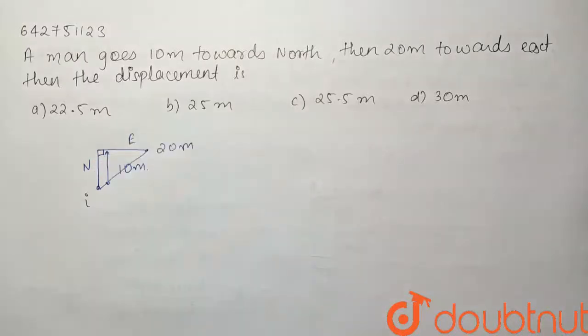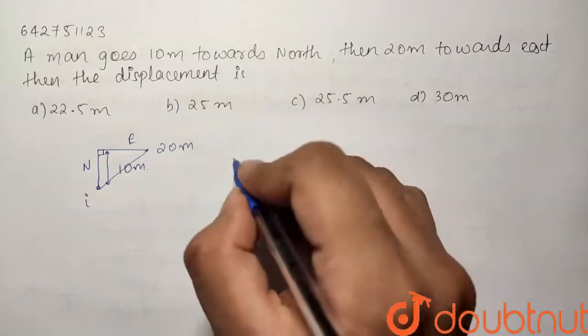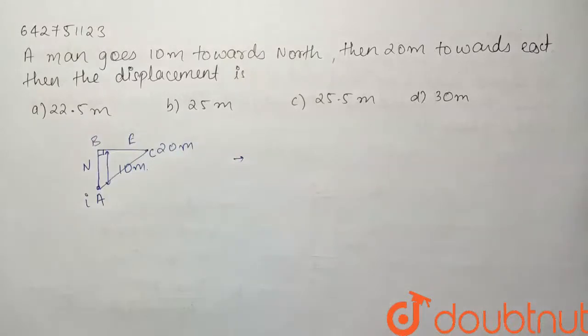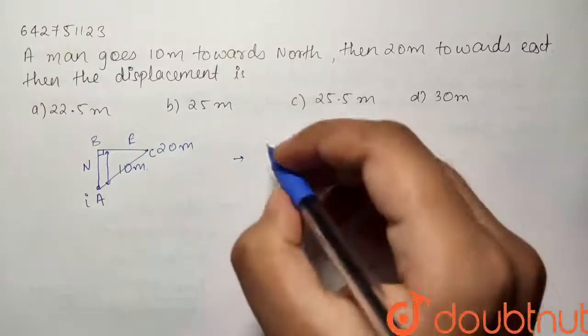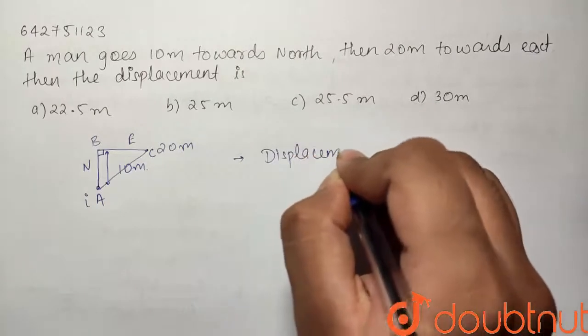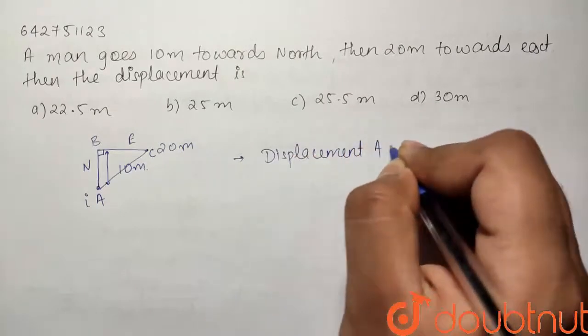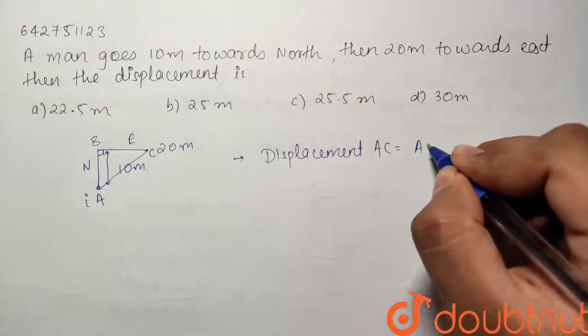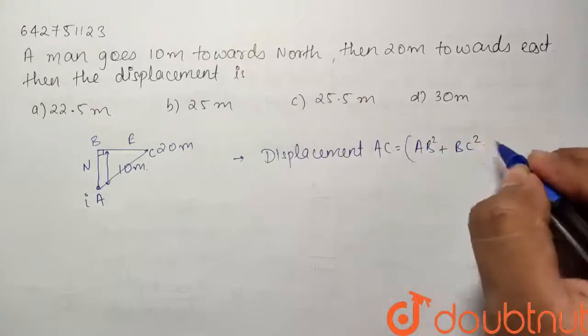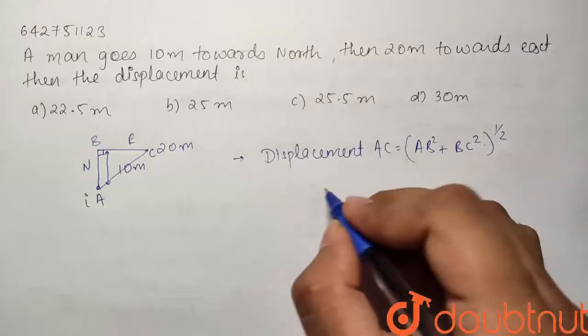So if I apply the Pythagorean theorem to find out the displacement, let us say this was A, this is our final position C, and this was our intermediate position B. So our displacement AC is equal to AB square plus BC square to the power half. So if I just put in the values,